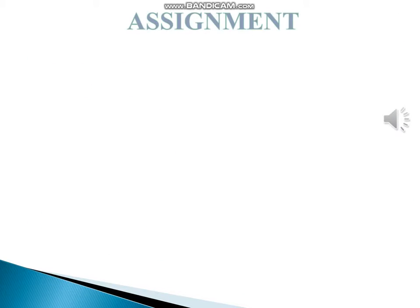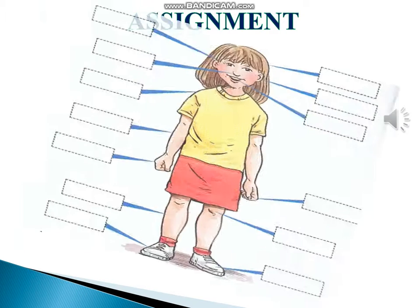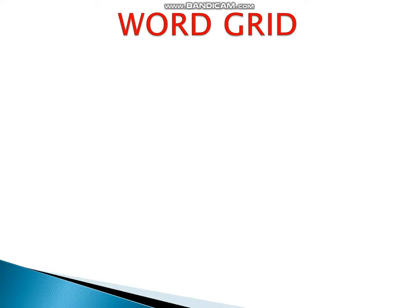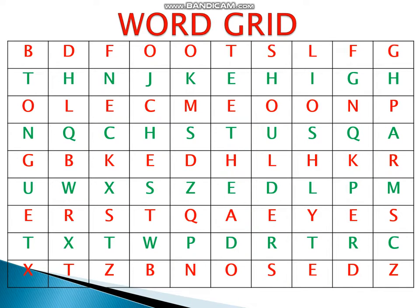Now it's time to check your knowledge about today's topic. Here are some questions as your assignment. See the picture given below and identify different body parts. Find out ten body parts from the word grid and write them down in your notebook. The first one is done for you.